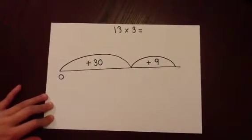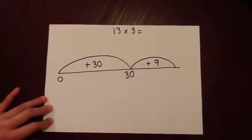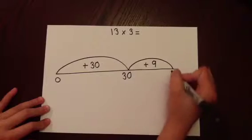Now we are going to add on those two numbers. So 0 add 30 is 30, 30 add 9 is 39.